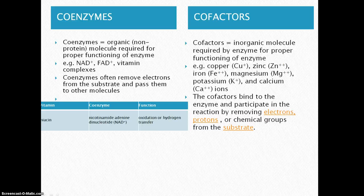Coenzymes are organic molecules required for an enzyme to properly function. An example is vitamins. Coenzymes remove electrons from substrates and pass them into other molecules.